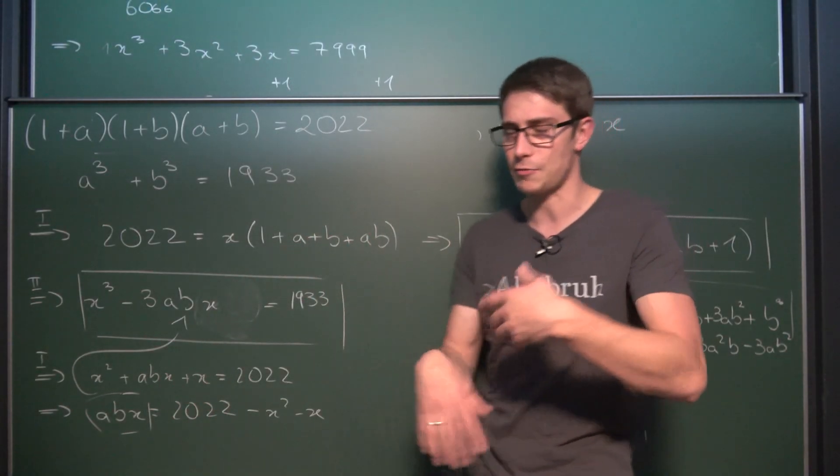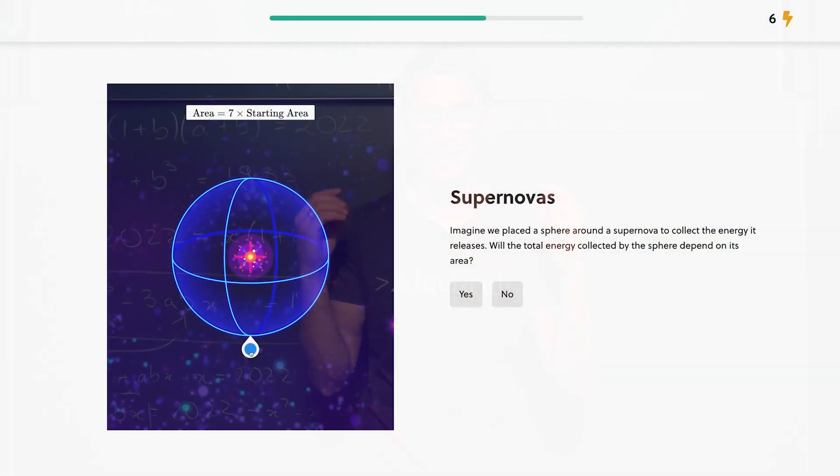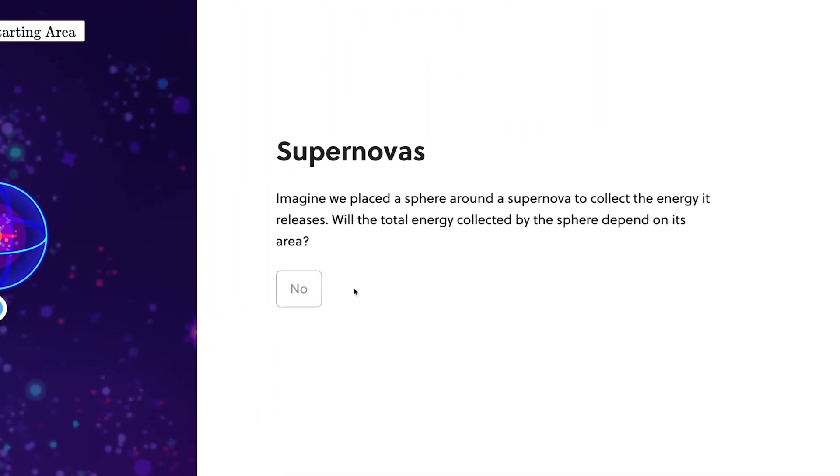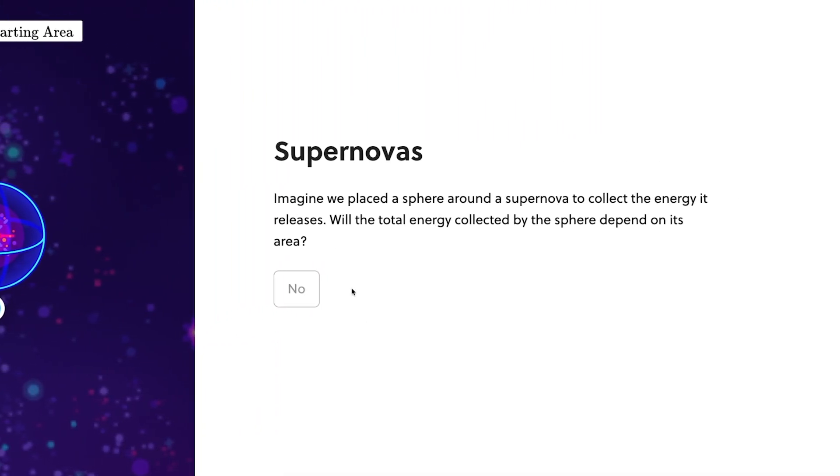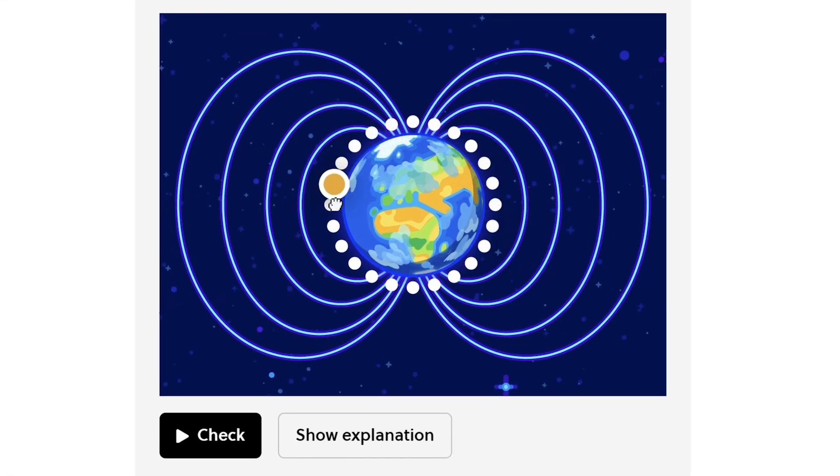And this is where Brilliant comes in. The platform for you to learn something new on a daily basis in every STEM field you can possibly think of. Be it the mathematics that we did today, physics, computer sciences, chemistry. No matter what it is you want to learn today in any kind of science field. Brilliant is there for you to give you an inspiration and also a little motivation to learn something new on a daily basis.